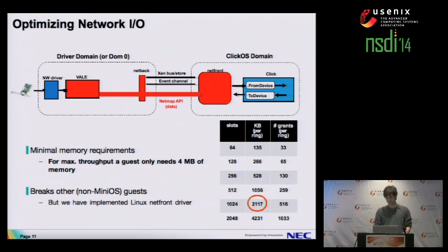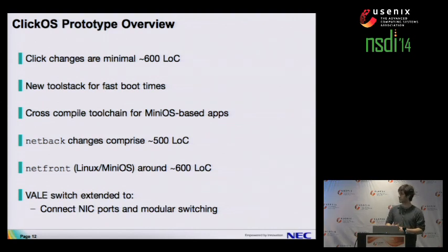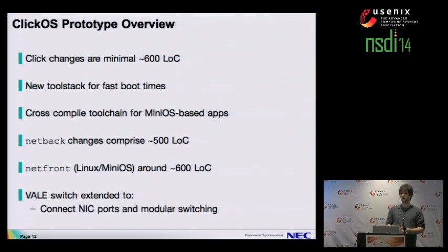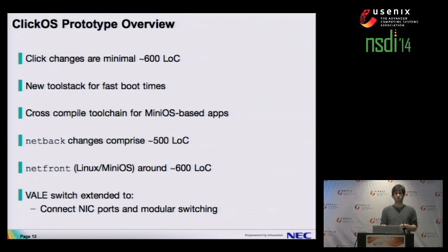The ClickOS prototype consists of very little changes to the core — around 100 lines of code regarding timers, random number generators, and some other things. We built a new toolstack for Xen, not using the standard Xen tools, to deliver fast boot times. We developed a toolchain to build more specialized VMs beyond ClickOS. Total changes to Netback and Netfront are around 500 lines of code on the backend and 600 on the frontend. We also extended the switch to connect hardware ports, decoupling the switching fabric from the actual lookup — so you can implement your own OpenFlow and not worry about switching packets around.